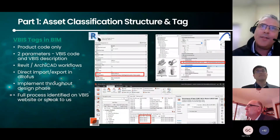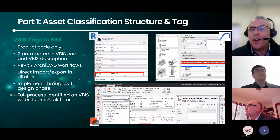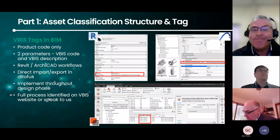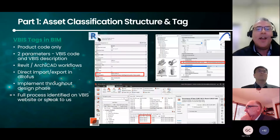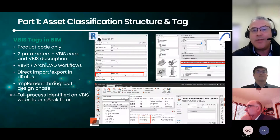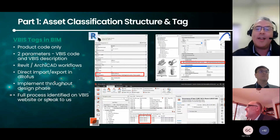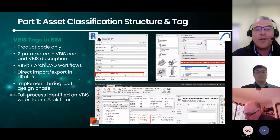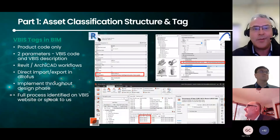To get the VBIS tag information into BIM, we have the classification for product codes. There are two parameters we want you to put into the model: a VBIS code and a VBIS description. As you can see, we have our VBIS tag input in Revit and ArchiCAD, and it has a direct import/export in Dorofus. We recommend that the VBIS tags get implemented throughout the design at various stages of important milestones. The full process is identified on the VBIS website, and we're more than happy to help.